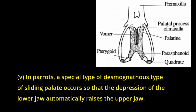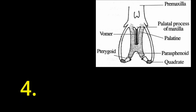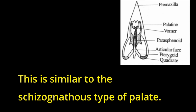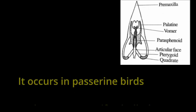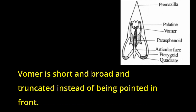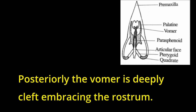In parrots, a special type of desmognathous sliding palate occurs, so that the depression of the lower jaw automatically raises the upper jaw. 4. Aegithognathous Palate. This is similar to the schizognathous type of palate. It occurs in passerine birds such as crows, swifts, bulbuls, etc. The vomer is short, broad and truncated instead of being pointed in front. Posteriorly, the vomer is deeply cleft, embracing the rostrum.